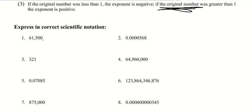Taking a look at the first number, our decimal point is currently sitting at the end of the number. We would like it to go in between the 6 and the 1 so that there's one non-zero number to the left. We move it 4 spots. So we move the decimal point 4 spots to the right, giving us 6.15. We're going to write times 10. And because this number out of scientific notation would be bigger, we want a positive 4 — so it's 6.15 times 10 to the 4th.